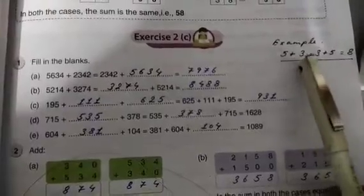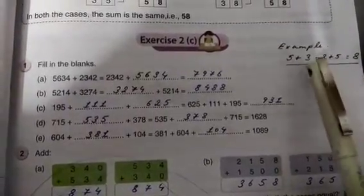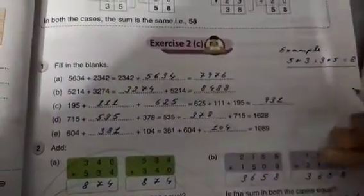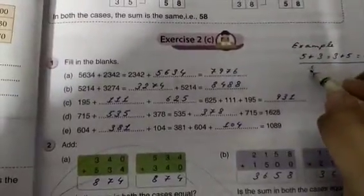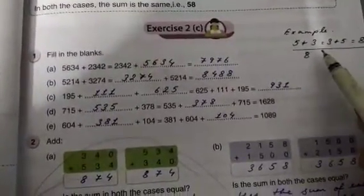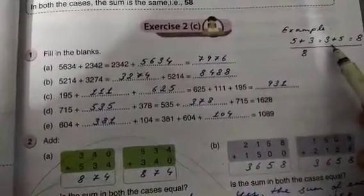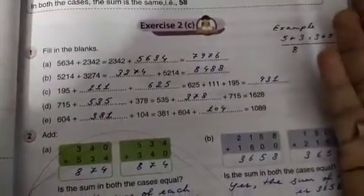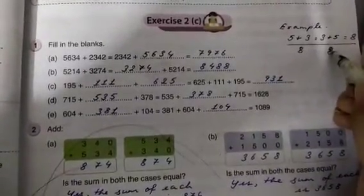See, children, 5 plus 3. 5 plus 3. How much? After 5, 6, 7, 8. Now see, equal. 3 plus 5. 3 plus 5 means how much? After 3, 4, 5, 6, 7, 8. Here also 8. So, equal, your answer is 8.